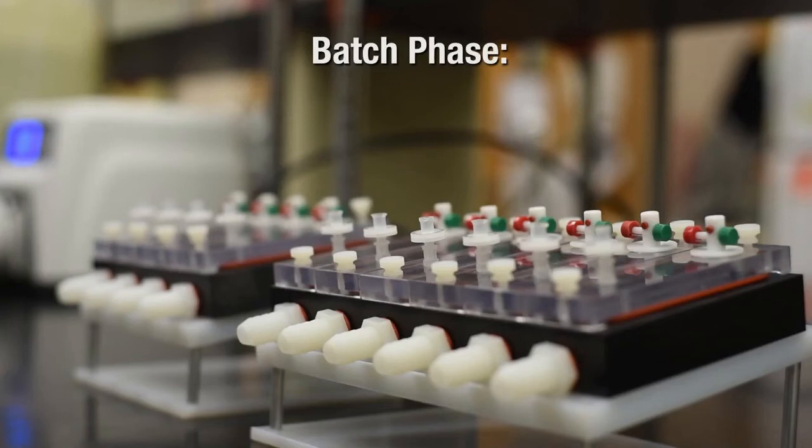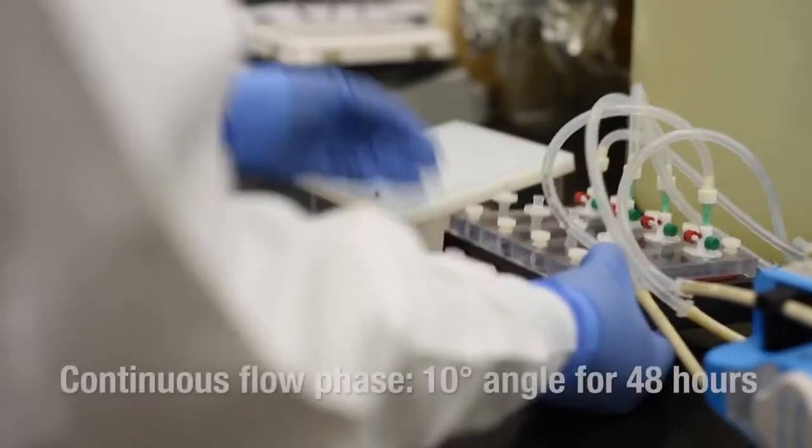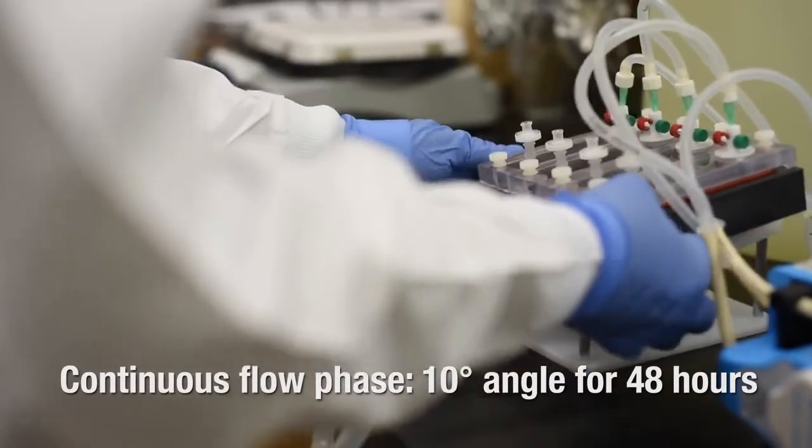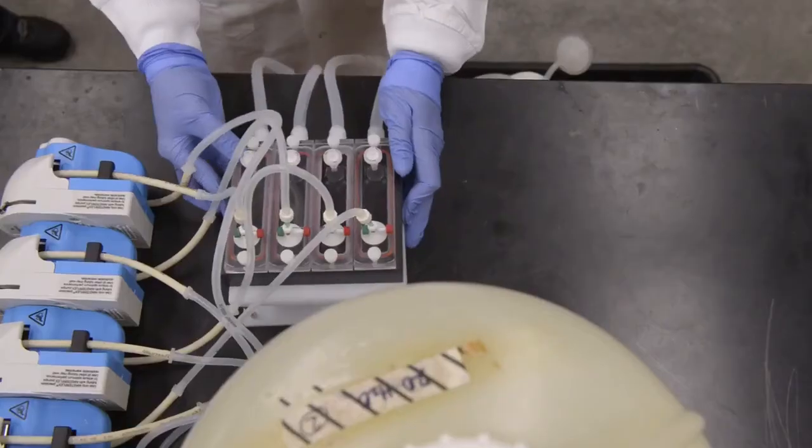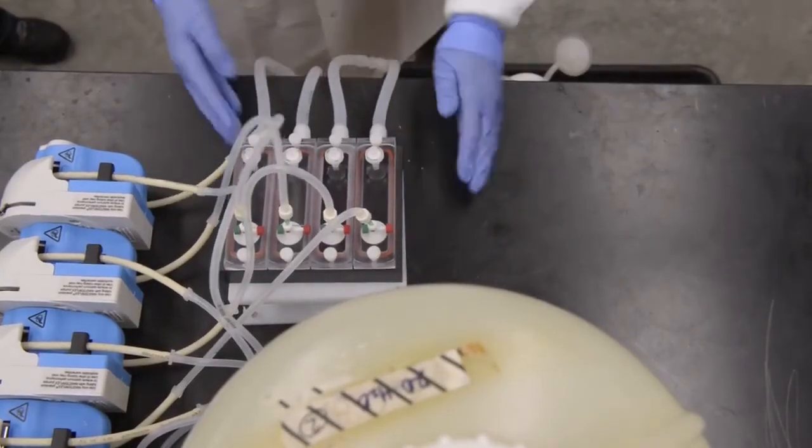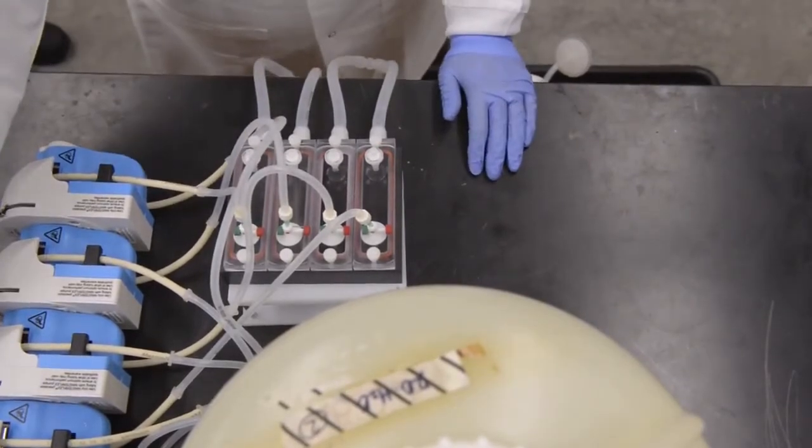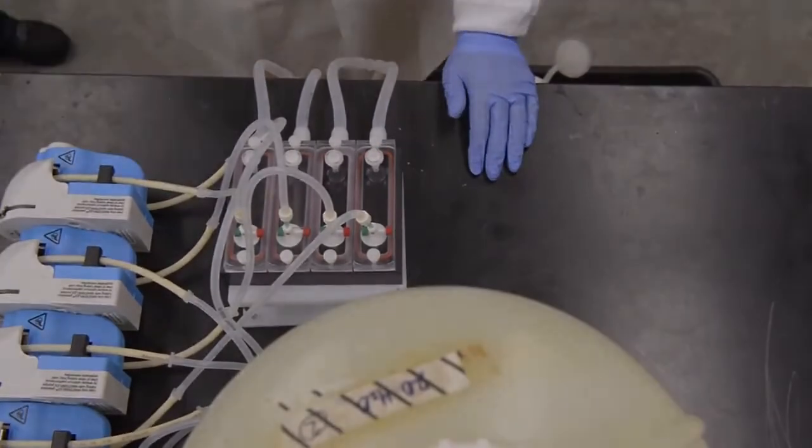For the batch phase, the reactor is incubated flat for six hours. During the continuous flow phase, the reactor is placed at a 10-degree angle and media is pumped into the influent port. The media flows down over the slide coupon and out the effluent port.